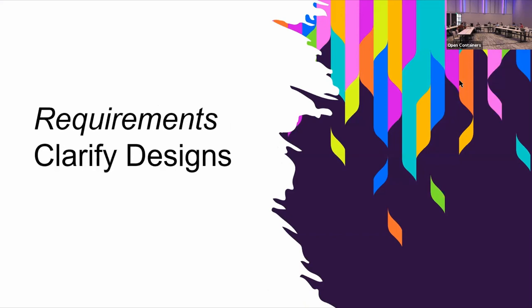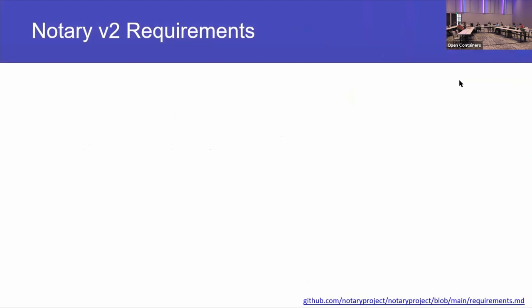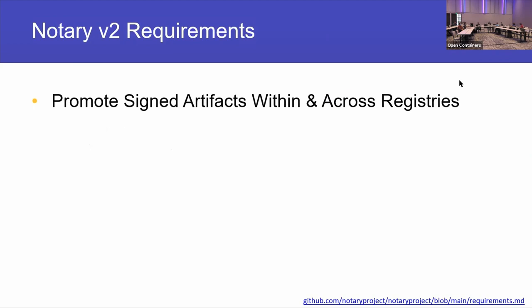That has a lot to do with how we came to where we are with the artifact spec — what are the requirements. We didn't set out to define references; we were building Notary v2, figuring out how to accomplish our goals based on what we learned from Notary v1. One thing we wanted to fix: we wanted to promote things within and across registries. With Docker Content Trust and Notary v1, if you sign an image in repo one in registry one, you can't even copy that content to repo two in the same registry without re-signing.